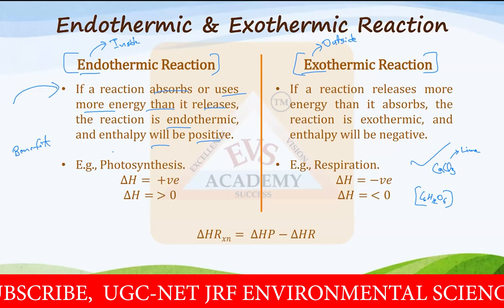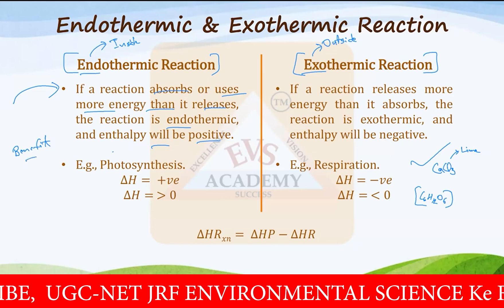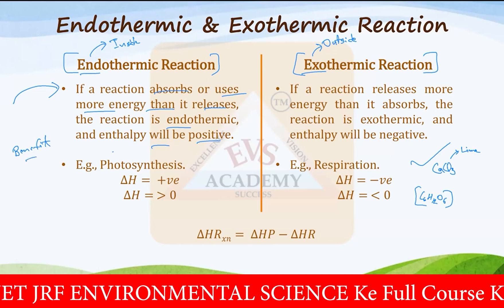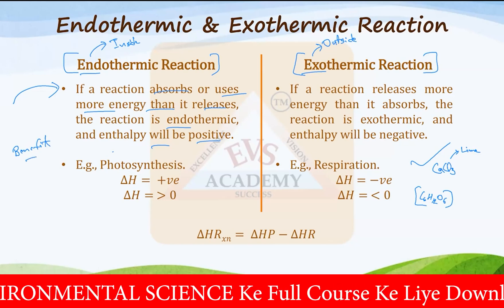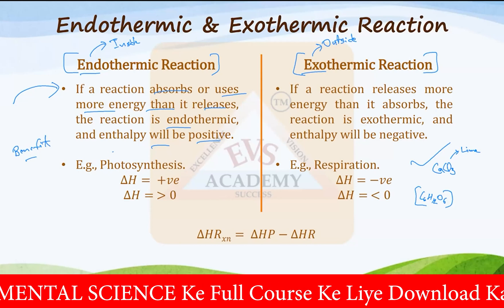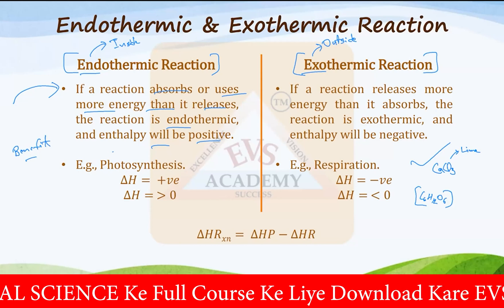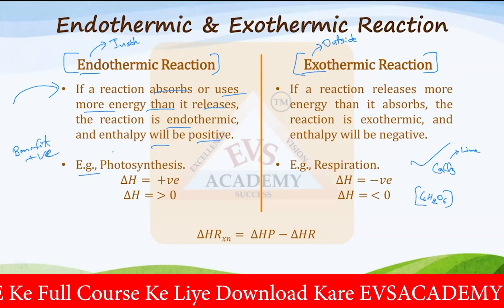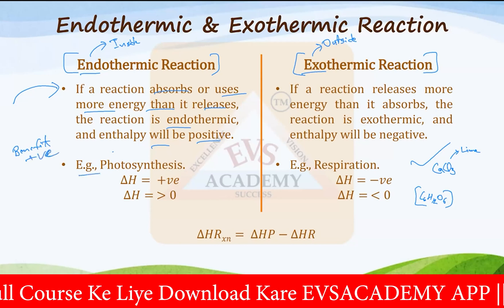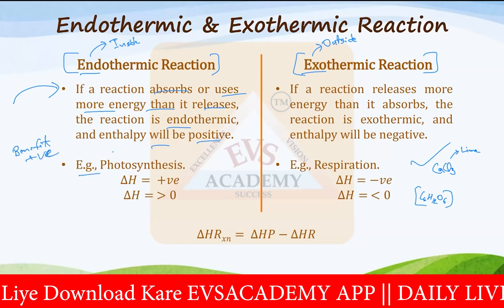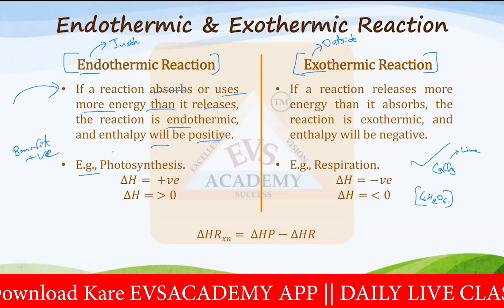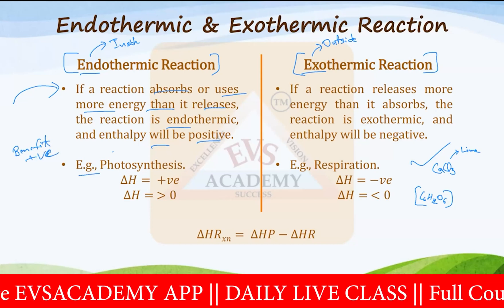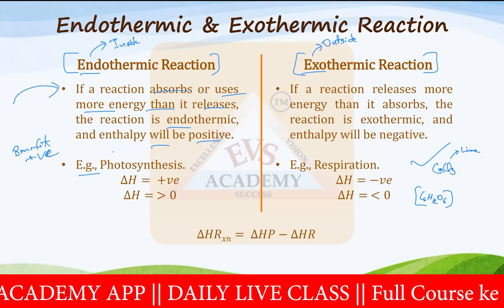For example, the photosynthesis reaction — in the photosynthesis reaction, the sun's energy is used to produce glucose. So that is a kind of endothermic reaction, and here the delta H value would be positive. Positive means delta H is equal to more than zero.